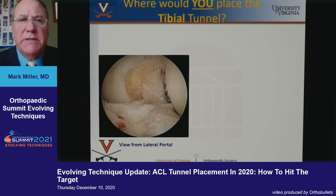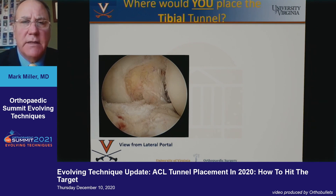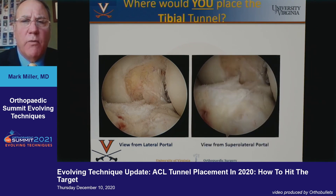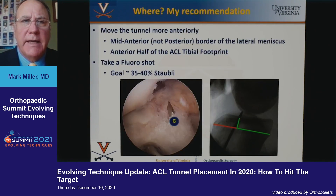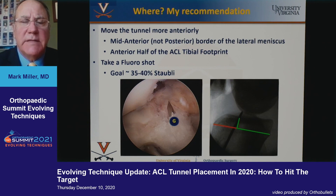Where do you put the tibial tunnel? If you view from the lateral portal, this is the view you have. But if you make that tunnel more superior from a more superior portal, you get a better view — the so-called 50-yard line view. Where do you place your tibial tunnel looking from the superior portal? Again, I push G. And when you look fluoroscopically, it's right about 35% to 40% of the way across Staubli's line.